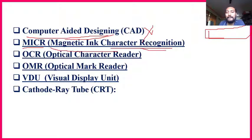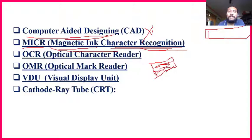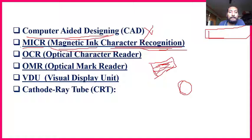MICR — Magnetic Ink Character Recognition — is very, very important. There will be a magnetic ink layer on products. Different types of color patterns — red, green, blue, yellow — will be there in zigzag or round shapes. If light hits it, like TV light or LCD light, the color changes. The machine that recognizes those patterns uses MICR. The magnetic ink in the system helps understand the characteristics of that particular item.